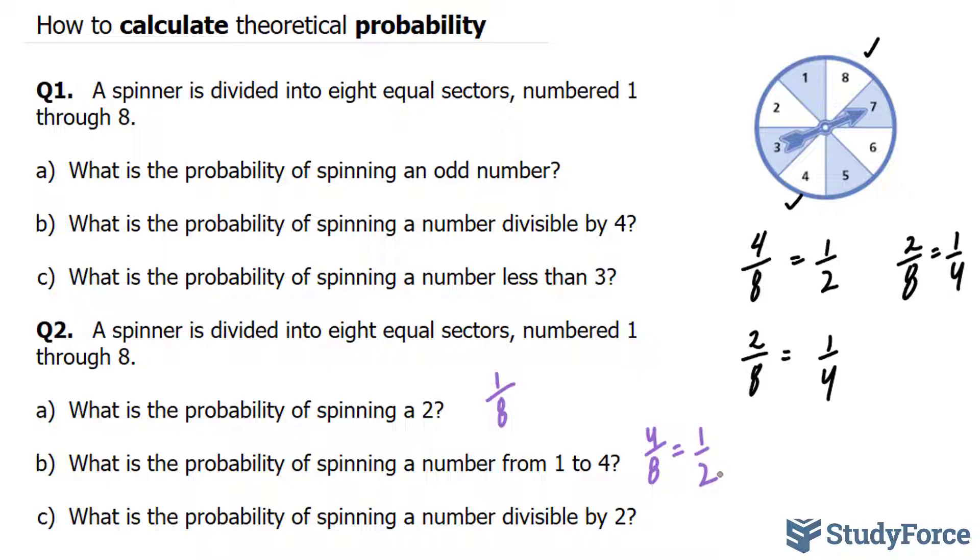And lastly, what is the probability of spinning a number divisible by two? How many numbers are divisible by two? Well, this eight is, so is this six, so is this four, and so is that two. Therefore, you have the same chances as the one above, which is half.